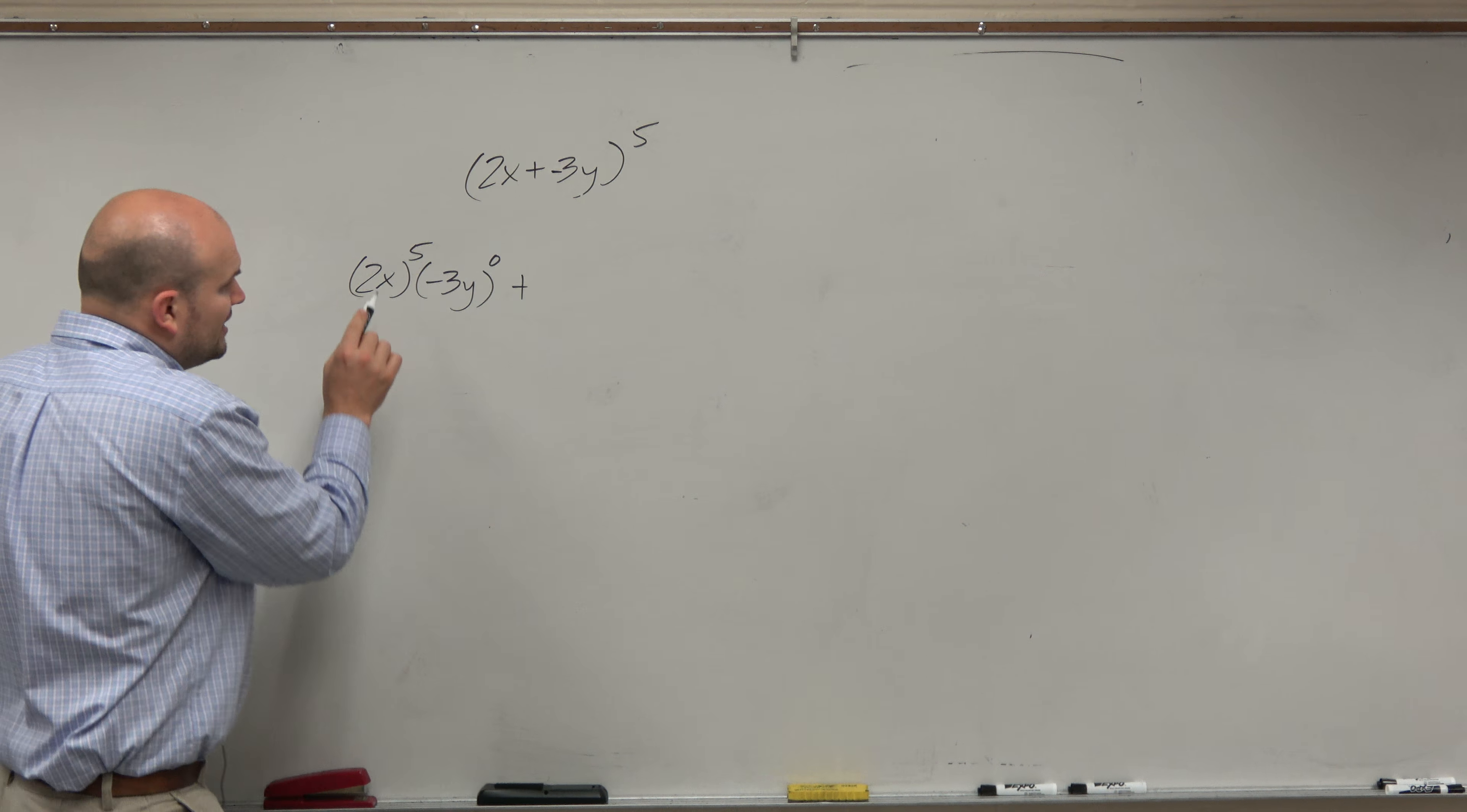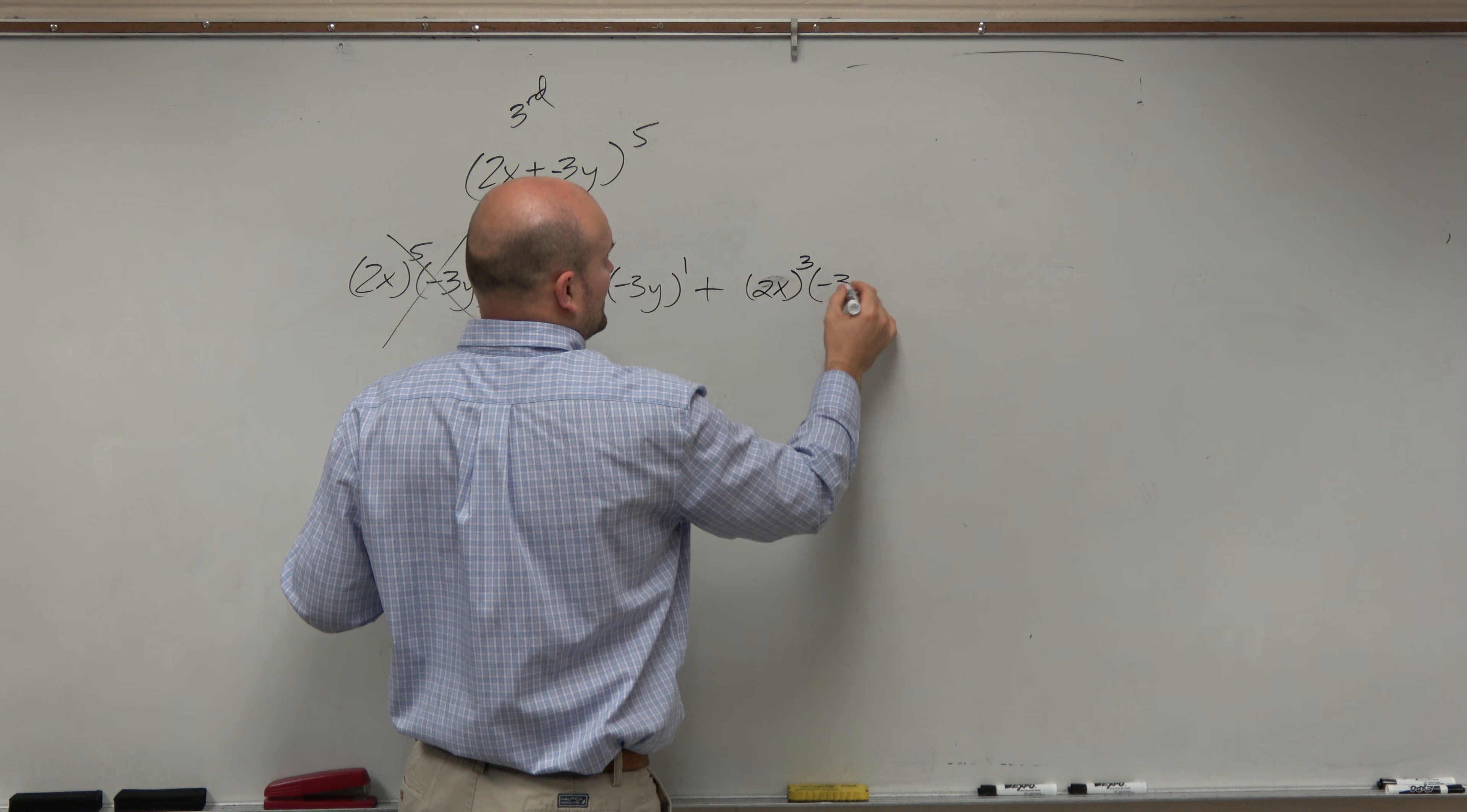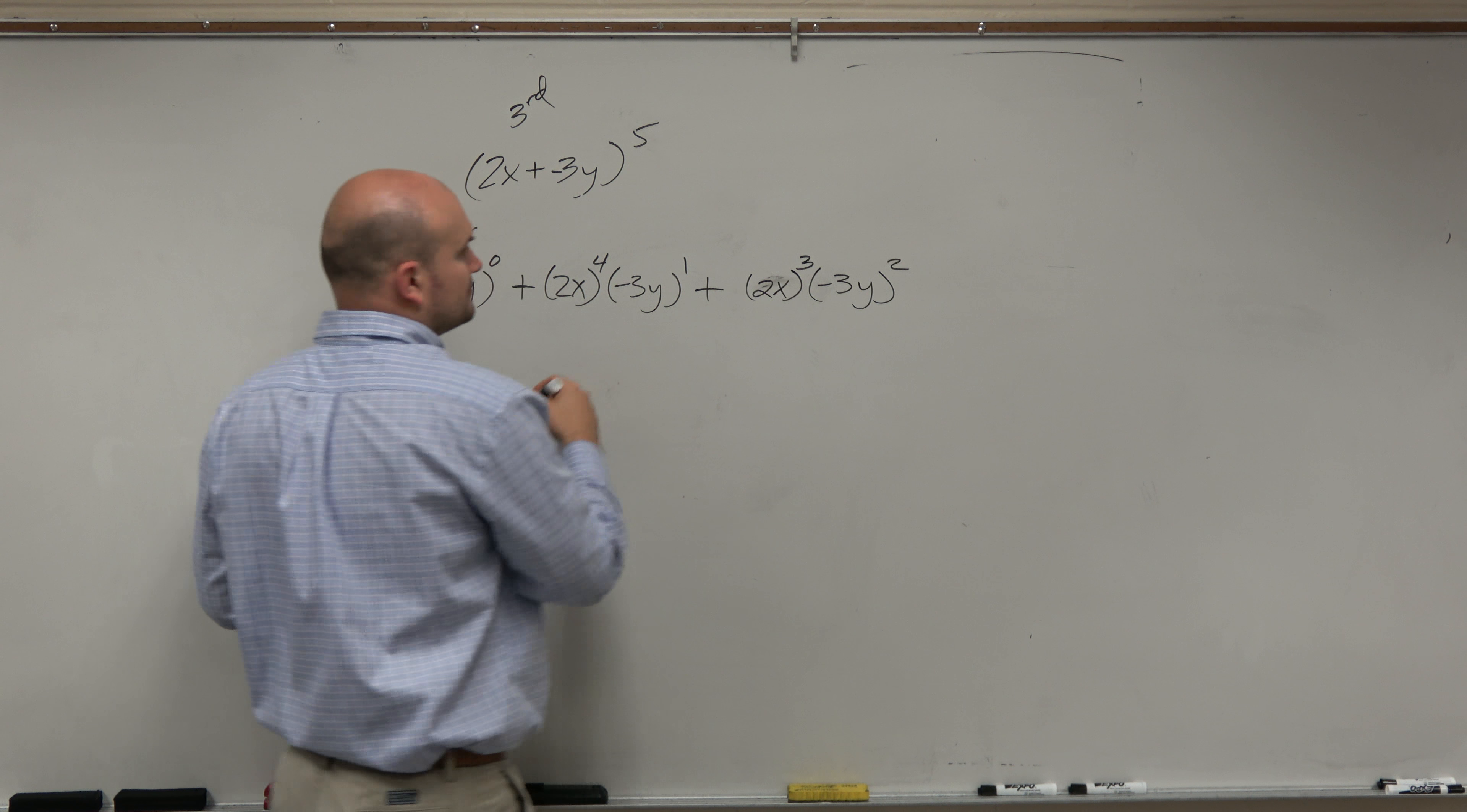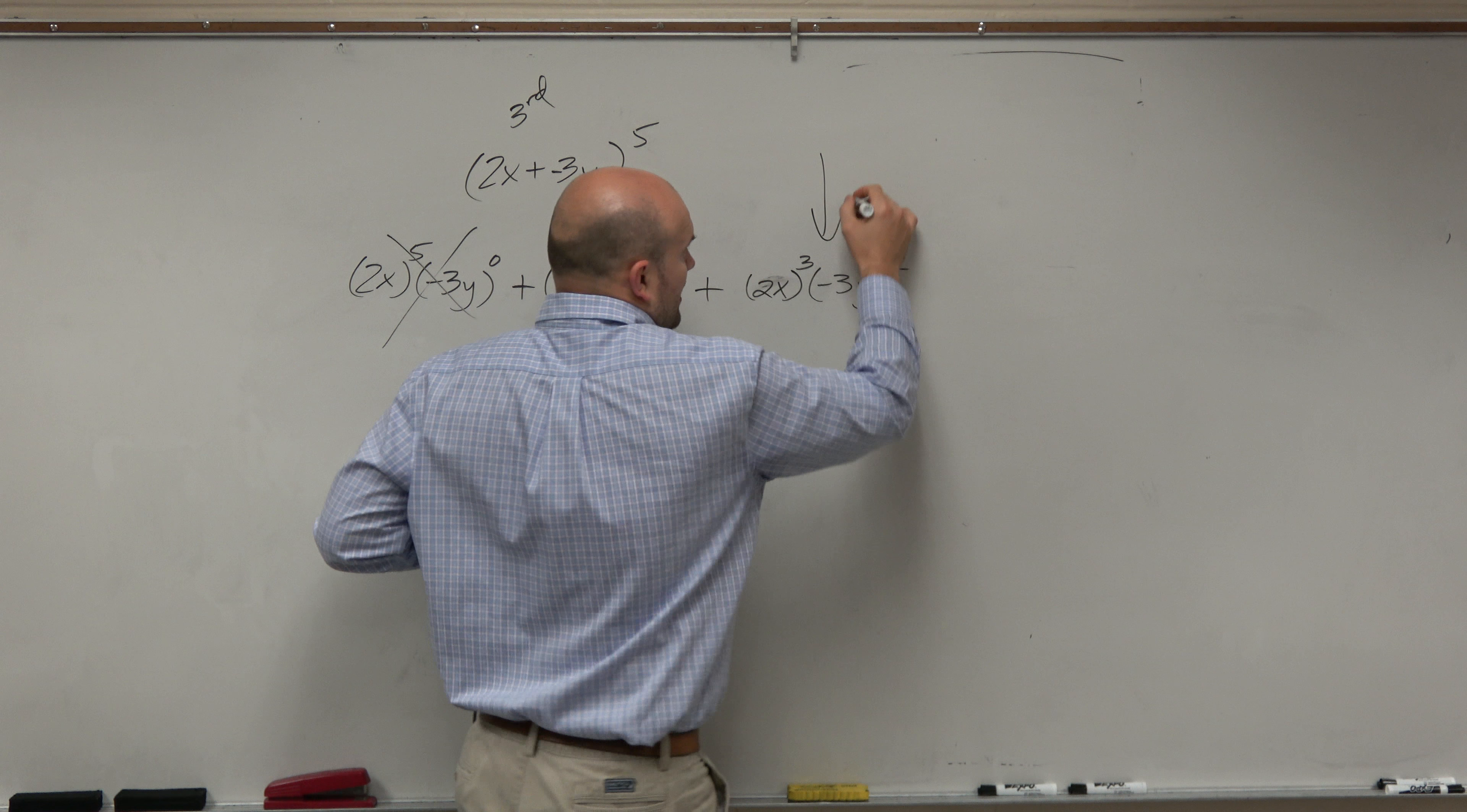We're trying to find the third term. So the second term is going to go in descending powers from the first term. But that's the second term. We're trying to find the third term, which is 2x cubed times negative 3y squared. So this is our term.